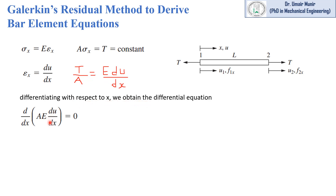This differential equation gives us the axial displacement — it is expressed in the form of axial displacement. With the help of this equation, we may find the displacement at any point of this bar element.